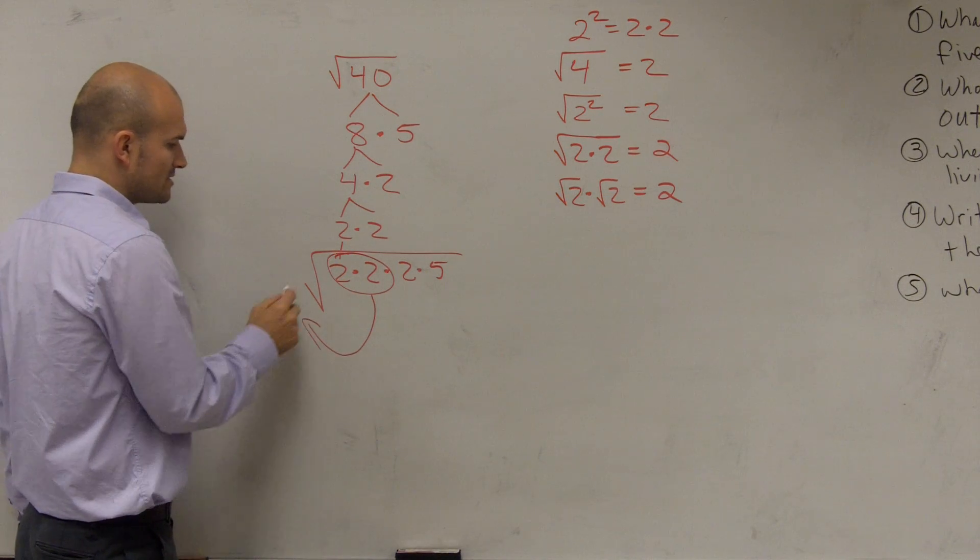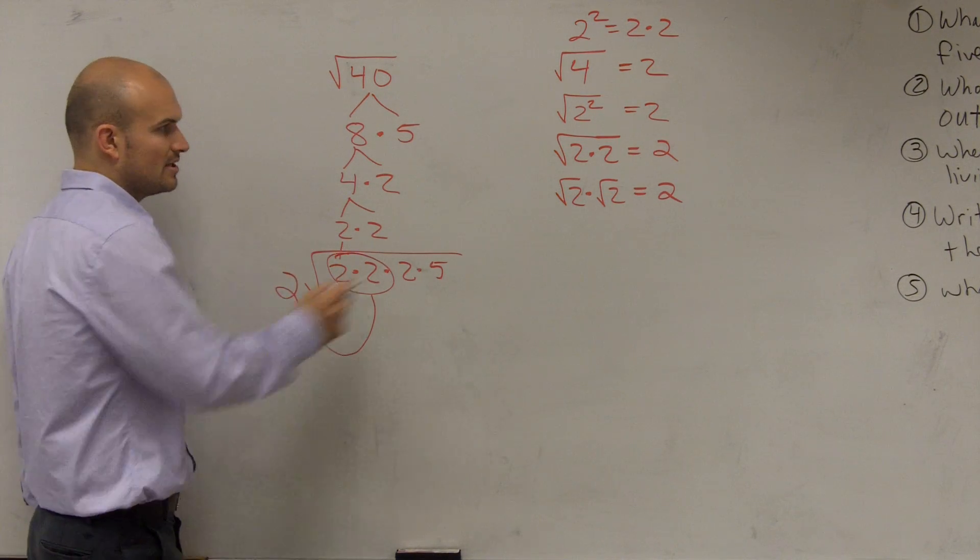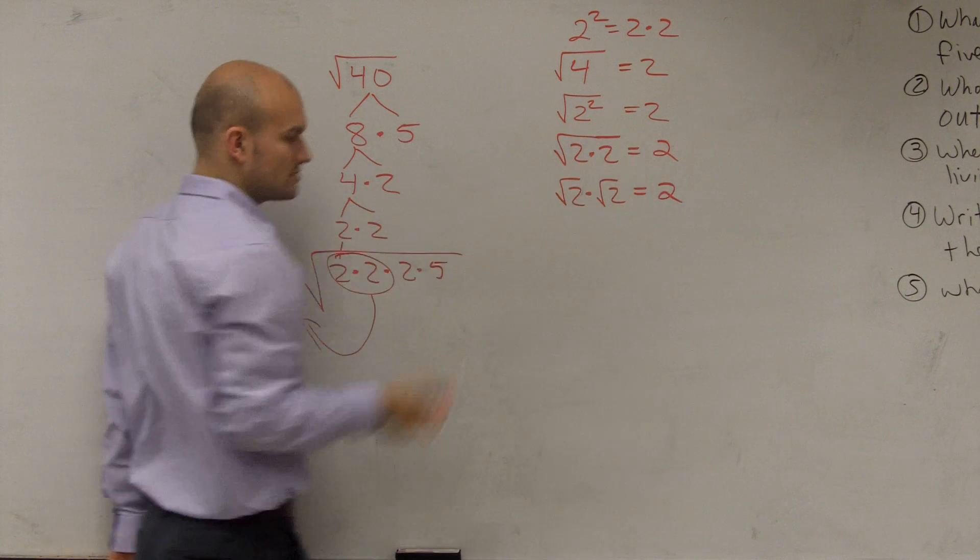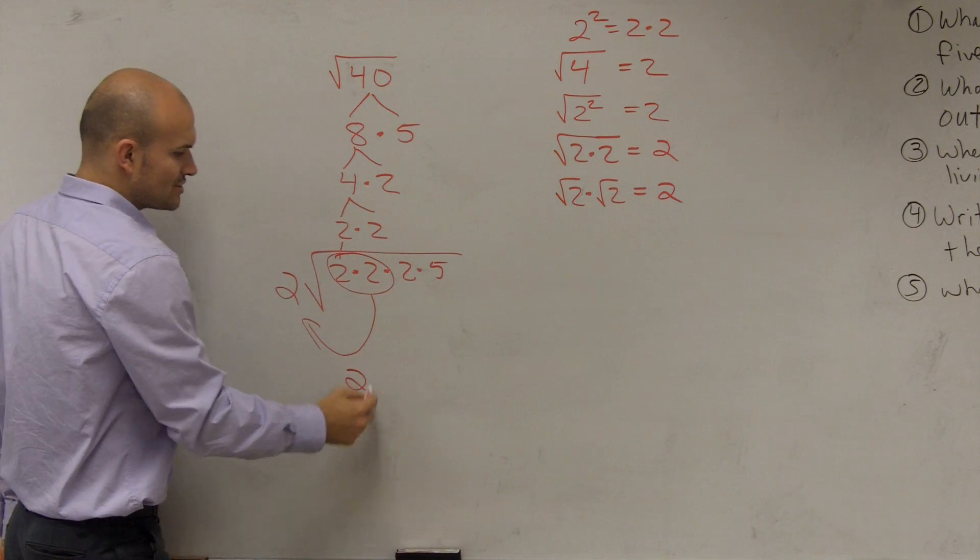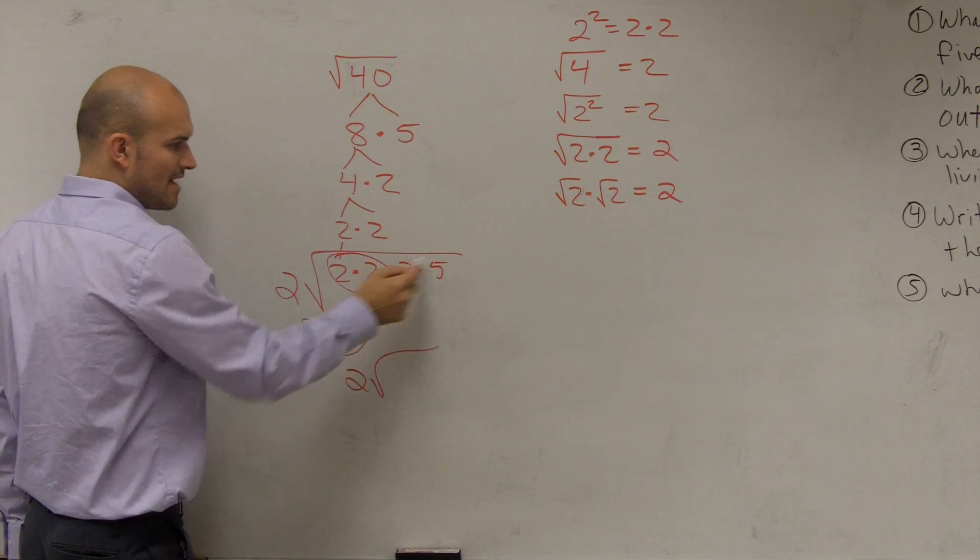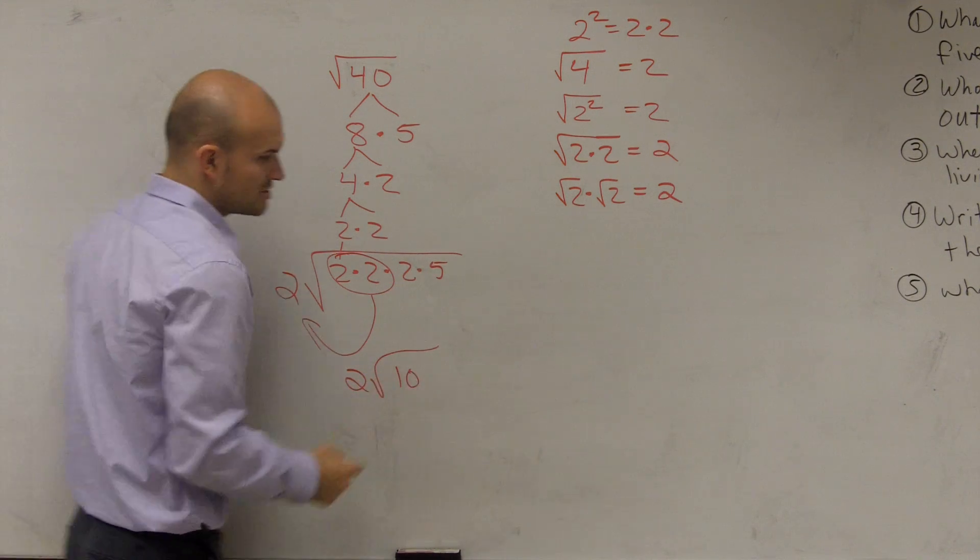So I can take that out of my square root and put it now on the outside, because the square root of 2 times 2 equals 2. Therefore, my final answer is 2 times the square root of 2 times 5, which is still left over there, which is 10.